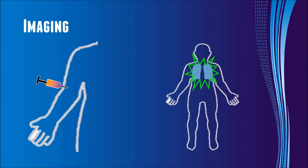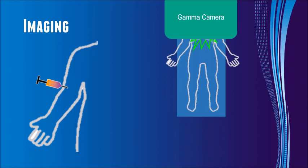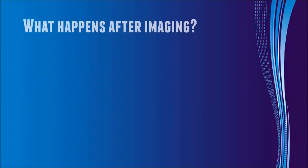How much of a tracer accumulates is often a representation of the severity of a disease. A specially designed camera called a gamma camera will capture the gamma emissions from the tracer and these emissions are used to form a diagnostic picture. But what happens after these images are taken?